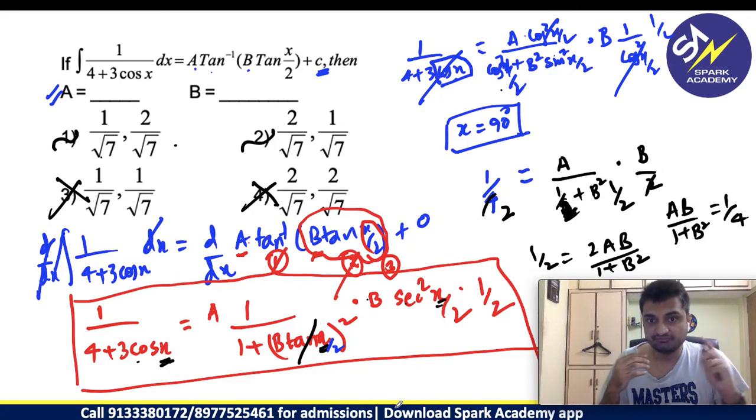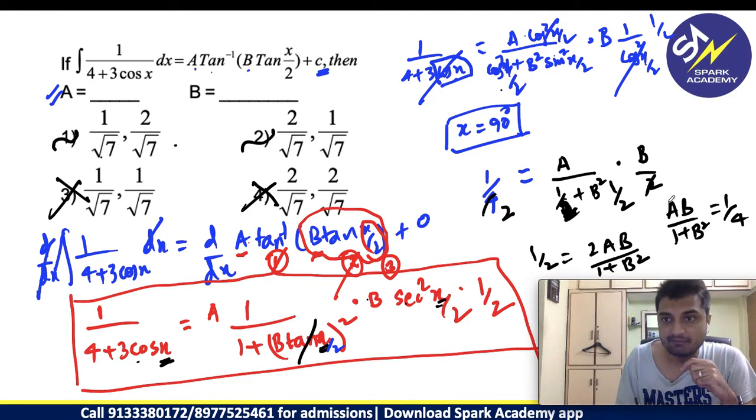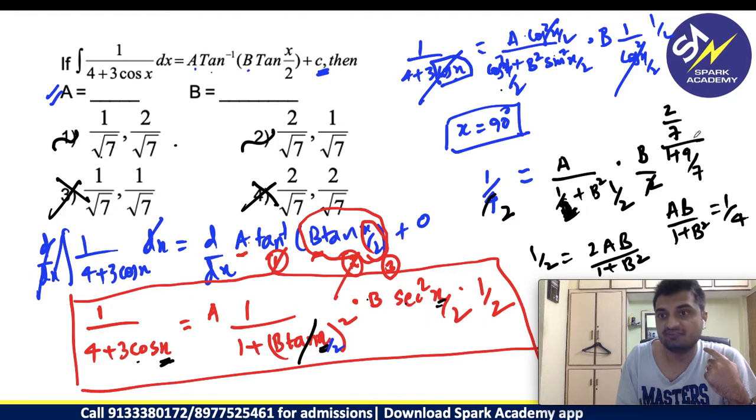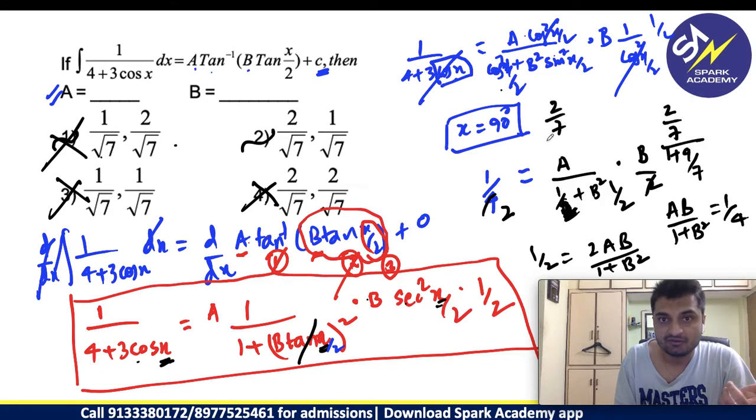Now you have to check which one is giving me 1 by 4. How can I do this now? You have to check first option if it is satisfying or you have to check second option. What will be first option now? 1 by root 7 into 2 by root 7 is 2 by 7 I am getting, whole divided by, what is this? 1 plus B square. 1 plus B square is 4 by 7. This will be 11 by 7. You are getting 2 by 11. Second is not the answer.